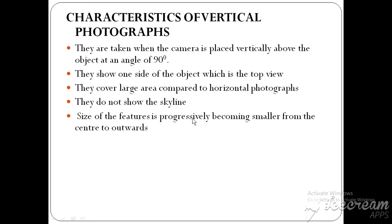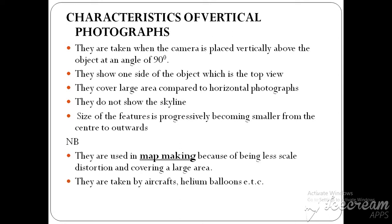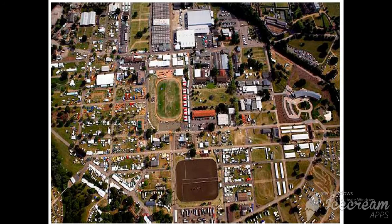Another characteristic: the size of the features progressively becomes smaller from the center outwards. Features in the center are larger, and as you go away from the center the size decreases. They are used in map-making because they have less scale distortion and cover a large area. These photographs are taken by aircraft or balloons. In a good example photograph you can see only the top parts — that is a vertical photograph taken by an aeroplane.